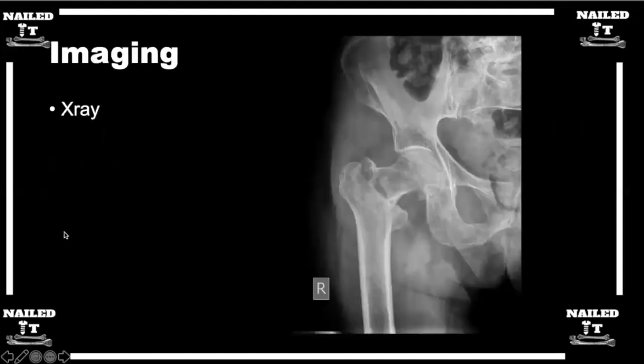Right now you showed me an AP of the hip. Pelvis x-rays are important so we can see what their normal hip morphology looks like. Everybody's hip is a little bit different. You really want to see what that other femoral neck looks like so that you have an idea of what normal is for this patient.